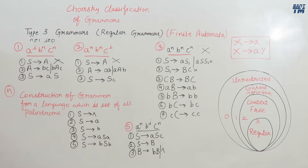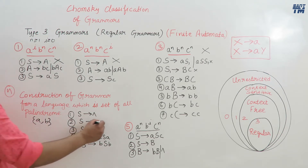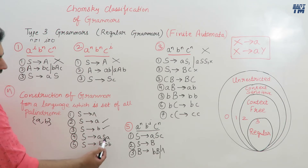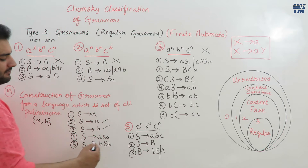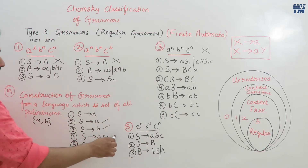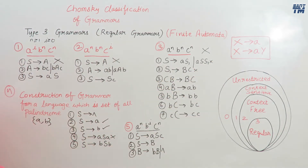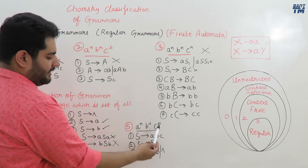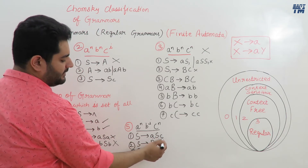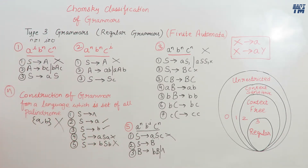For palindromes over {a, b}, the production rules include S derives ASA and S derives BSB. A terminal followed by a non-terminal and then another terminal does not match any regular grammar rule form. Similarly BSB is also not valid. For a^n b^i c^n, having a terminal, non-terminal, terminal combination also doesn't follow the rule. Therefore, all five examples from previous videos were not regular grammars.